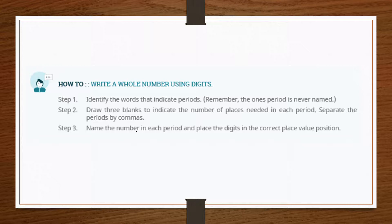We identify the particular words that indicate the period that we're in and recall that the ones period is never named, so that's at the very end. When we draw the three blanks that we need to include the number of places for each period, we implement the digits named by our English language vocabulary and then simply name the number in each period, placing the digits in the correct value position.